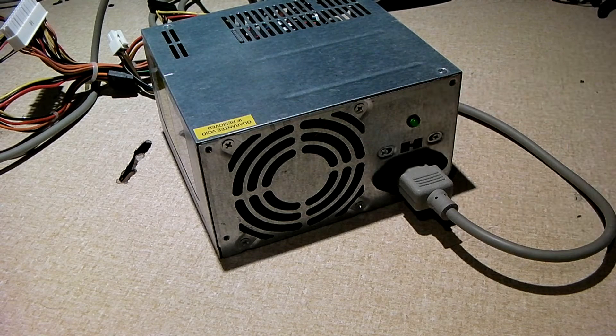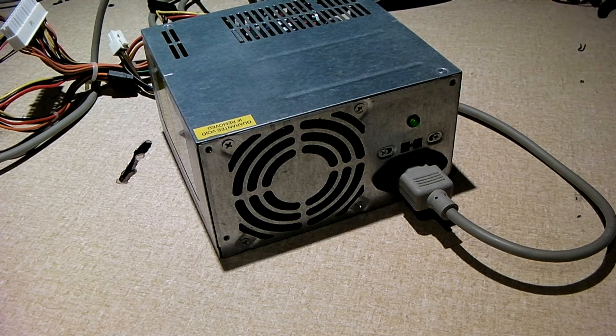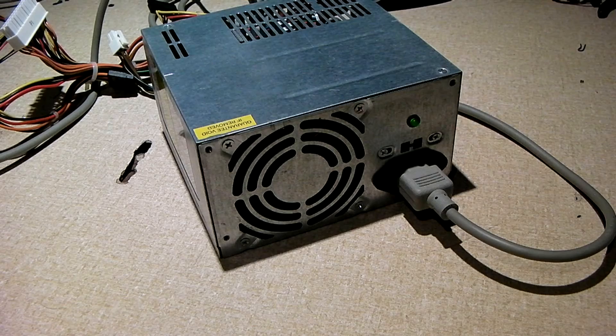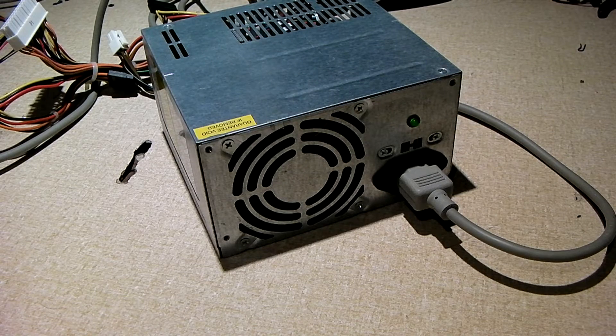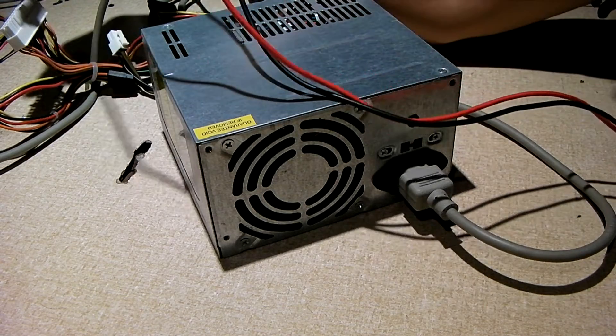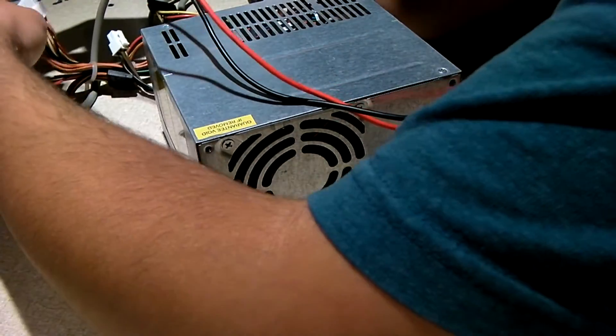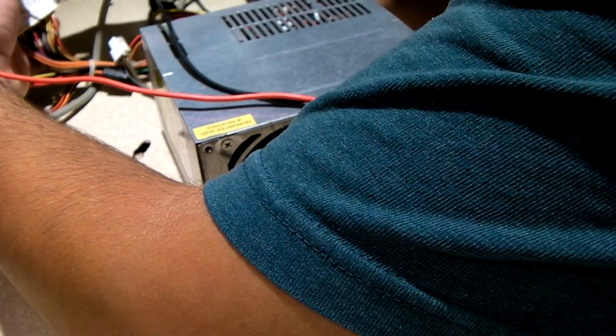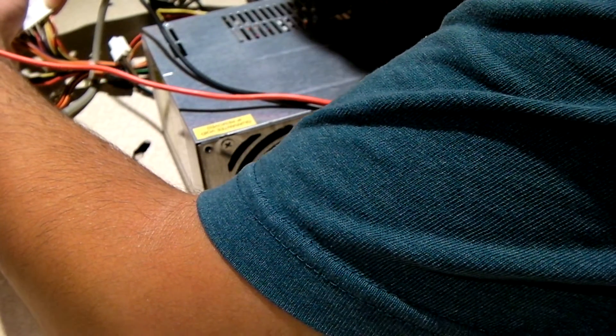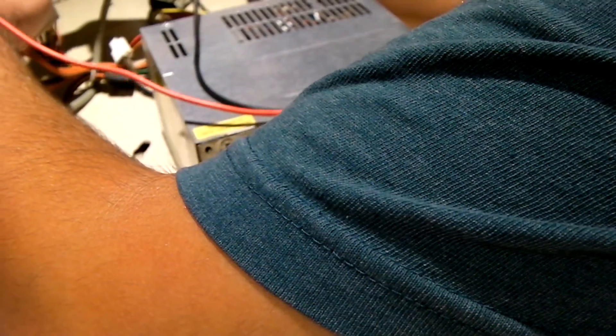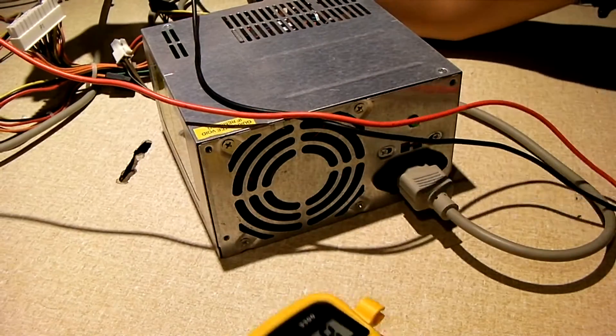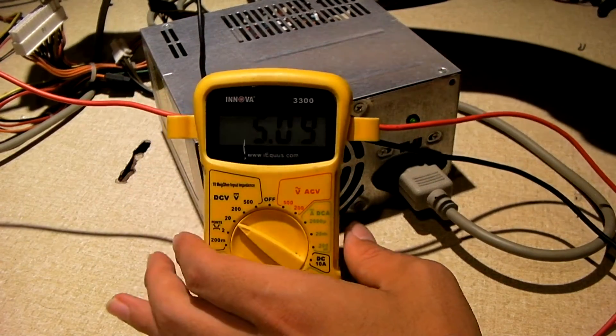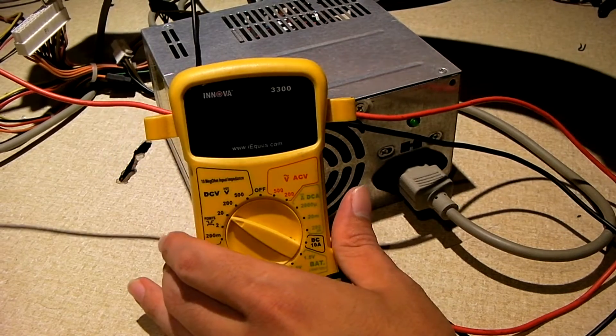In Power Off we have a green light. When we check our 5 volt standby wire, which is the purple wire, we have about 5.1 volts. Let me move the meter so you can see it better. So 5.1 volts.